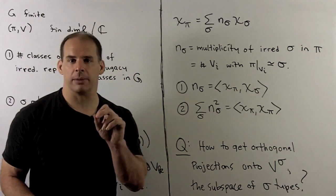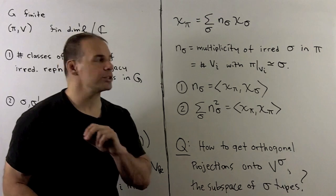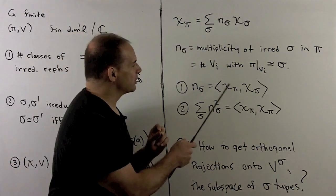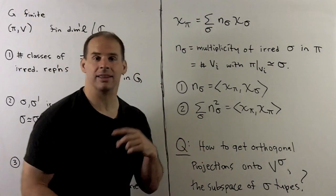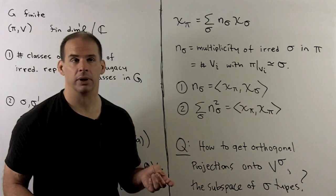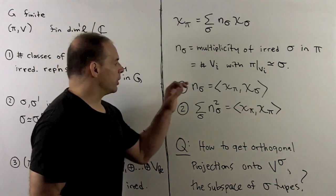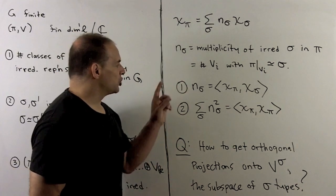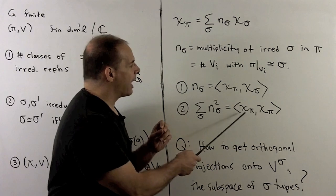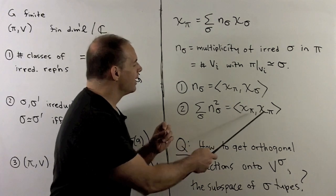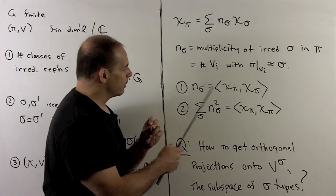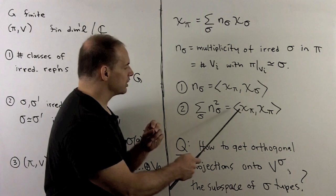We have a formula for n sub sigma in terms of the characters. We just take the inner product of chi sub pi with chi sub sigma in the L2 norm. Once we have all these, to check our work, if we take the inner product of chi sub pi with itself, that will be equal to the sum of the squares of the multiplicities.